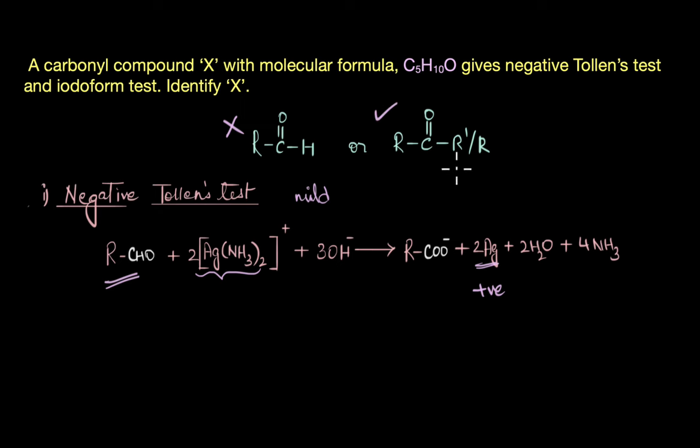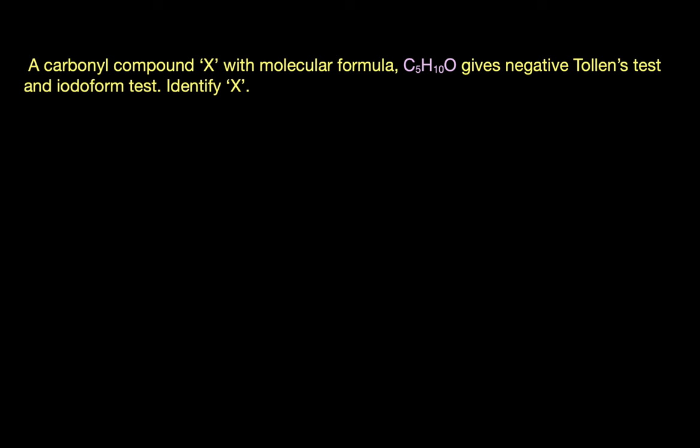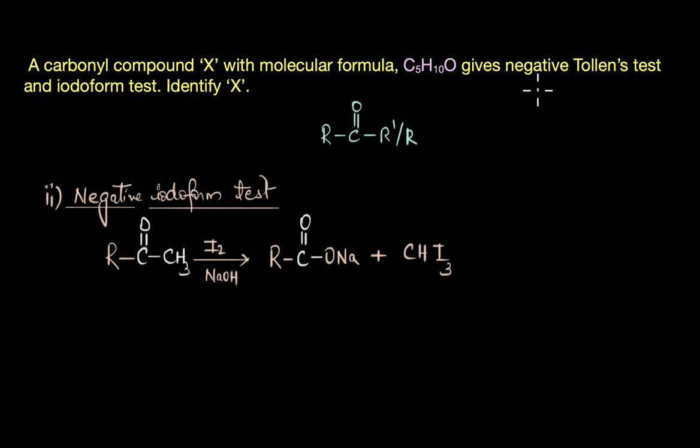Now that's great, but how do we figure out the structure of this ketone? Well, from the question we also know that X gives a negative iodoform test. You see, iodoform test is specific for methyl ketones and ethanol.